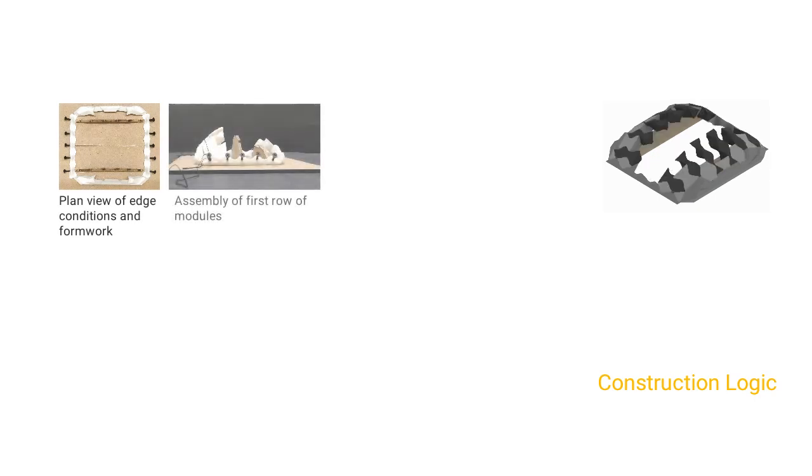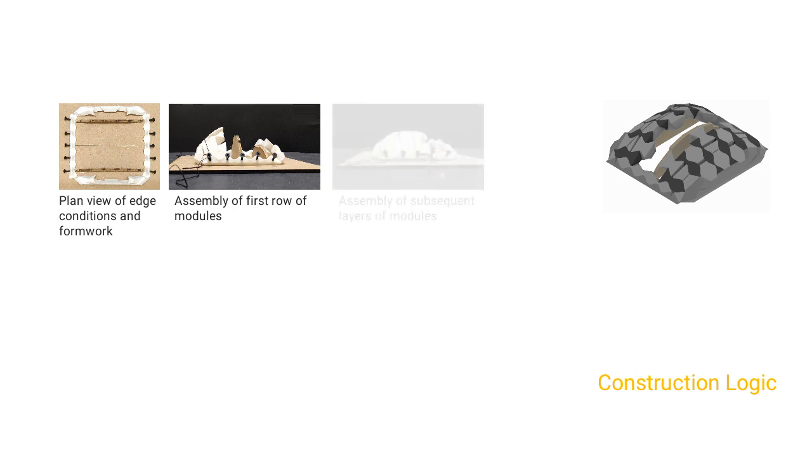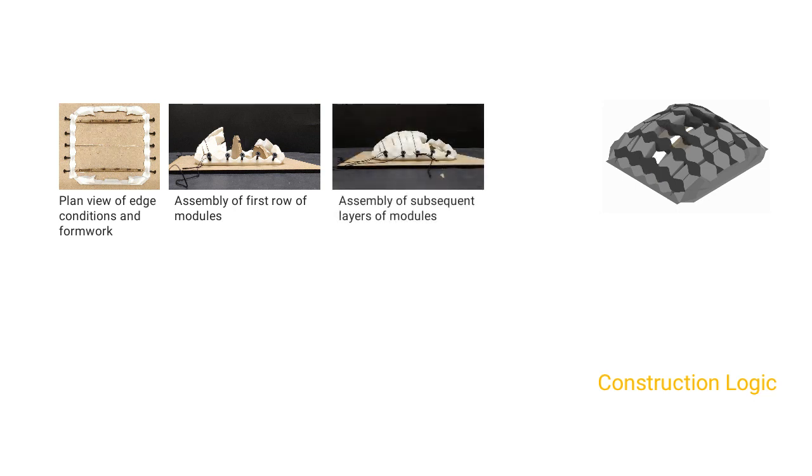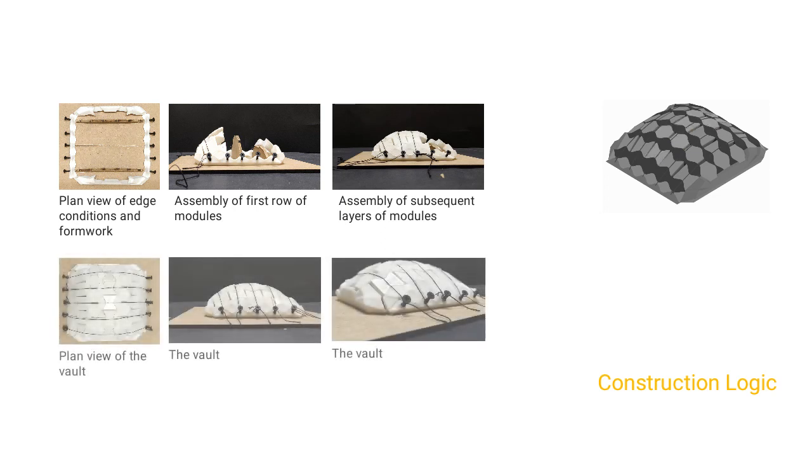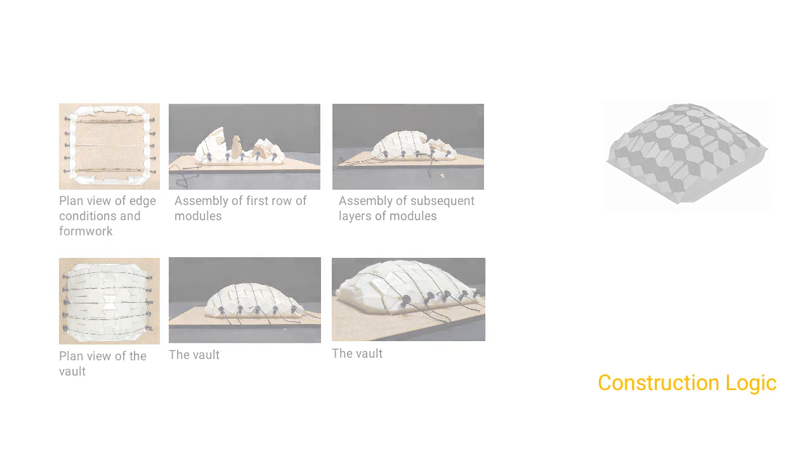For symmetrical form having a square plan and four linear supports, the assembly begins from the outer edge having two parallel supports for the first arch. Modules are staggered and the first arch requires scaffolding. The rest can be assembled without continuous scaffolding. Supports can be provided at strategic locations.